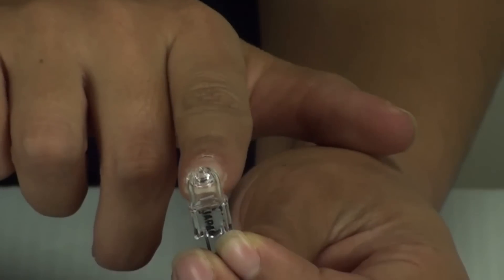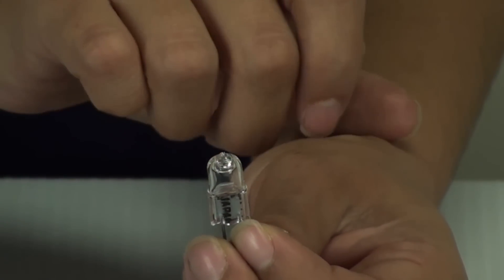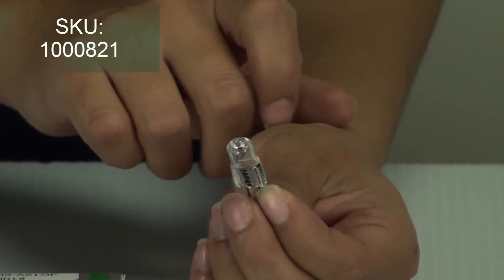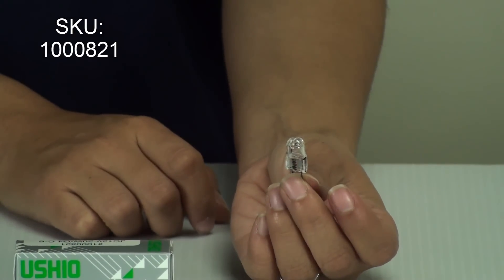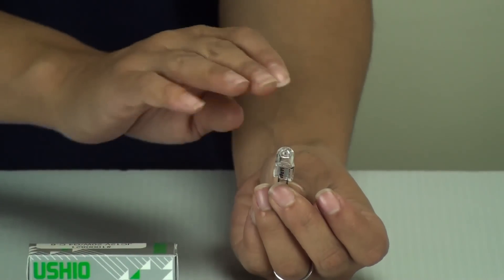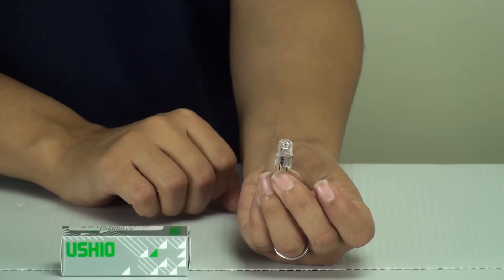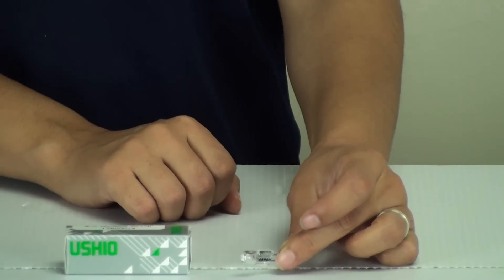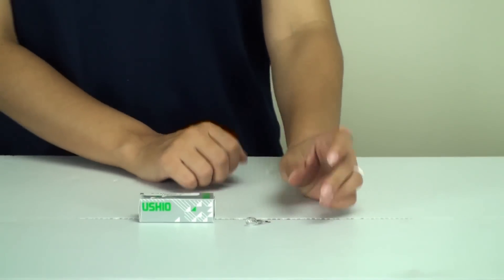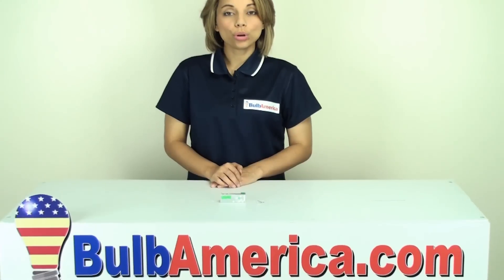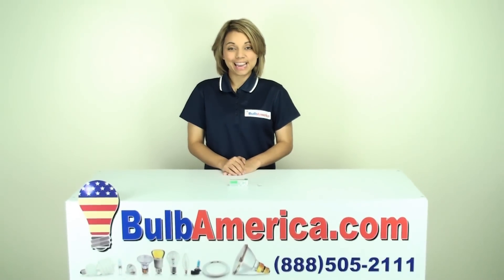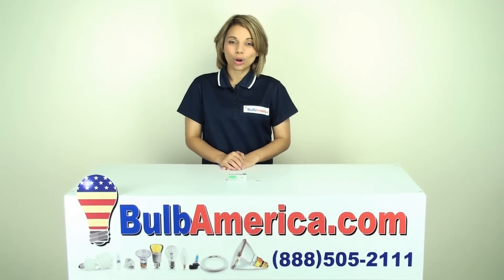You can type the SKU 1000821 into the search bar at BulbAmerica.com, and it will bring you directly to this Ushio item. If you need any further information, you can visit us at www.BulbAmerica.com or call us at 1-888-505-2111. Thanks for watching.